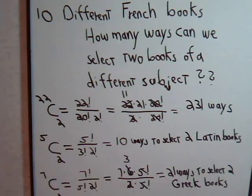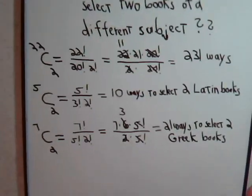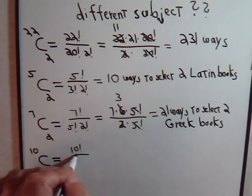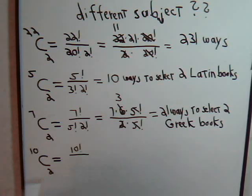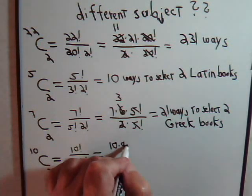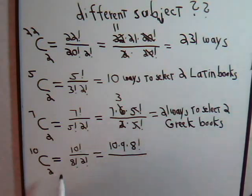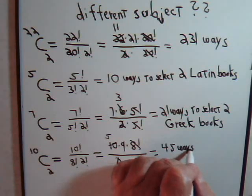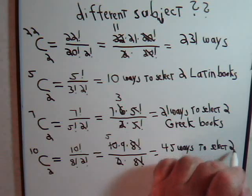We also have ten different French books. How many ways can we select two of them? That's C(10,2), which equals 10 factorial divided by 8 factorial times 2 factorial. This equals 10 times 9 times 8 factorial, divided by 8 factorial times 2 — those cancel — giving us 5 times 9, which is 45 ways to select two French books.